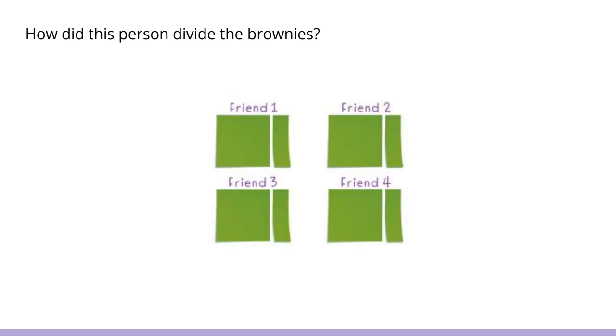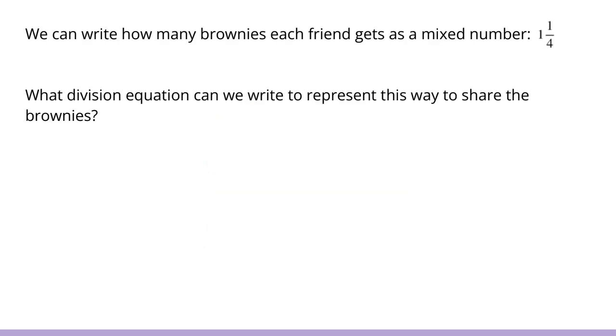This is one way that a student divided the brownies out. How did this person divide the brownies? Well, if you know that each person is at least going to get one brownie, we can give everybody one whole brownie, and then divide the last one into fourths. So this would be one and then one fourth that each person got. We can write how many brownies each friend gets as a mixed number: one and one fourth. This is a mixed number. Now what division equation can we write to represent this way to share the brownies? Well, it would still be the same division statement that we had at the beginning. Five divided by four equals one and one fourth.